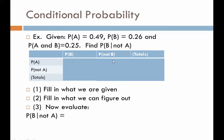Continuing to fill in the empty boxes, we're left with the last one: we had 24%, and the bottom total was 74%. So we fill in that box with the missing information, and we now have a completed table.